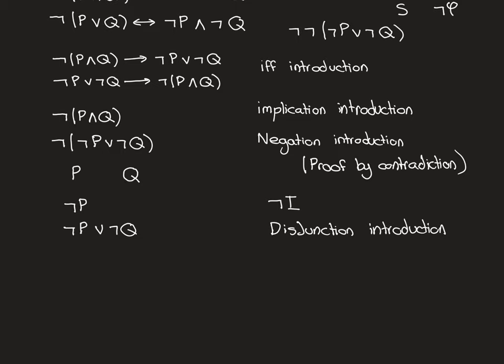The same argument holds for Q. You do a proof by contradiction — negation introduction — so you'd assume not Q. If you have not Q, you then also have 'not Q or not P' by disjunction introduction. That's the same proposition 'not P or not Q', so you arrive at a contradiction with the premise again. By negation introduction you have not-not-Q, which by double negation is Q. So what I've just shown is that if we have 'not (not P or not Q)', then we have P and we have Q.